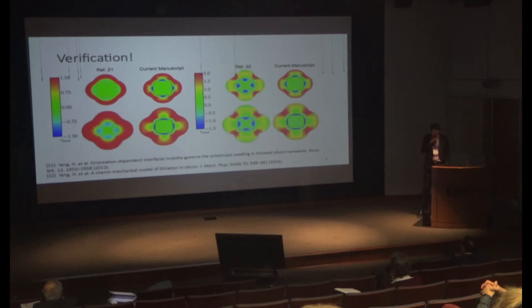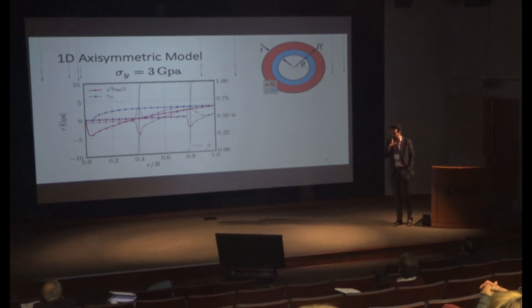Let's do some simple stuff. I'm going to make the problem simple first—I want to do an axisymmetric model. I start lithiating. What do I see? When my yield strength is low, I lithiate—that's the gray lines—as the phase boundary moves in.